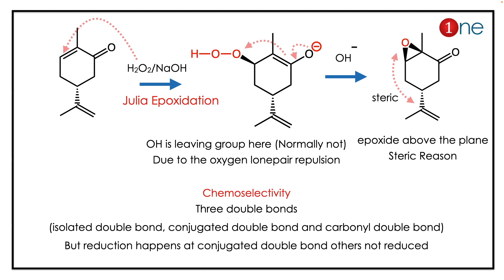There is an isolated double bond, a conjugated double bond, and a carbonyl double bond. Only the conjugated double bond is epoxidized due to hydrogen peroxide and NaOH, which is Juliá's reagent. So it forms a peroxide first, then the O⁻ is formed.